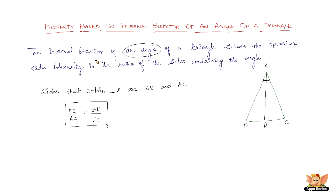Let me read the statement and explain it once more before we go to the next video. The internal bisector of an angle — the angle we are talking about is angle A, and the internal bisector is AD. That is going to divide the opposite side, BC. It is going to divide side BC internally in the ratio of the sides containing the angle. The sides containing the angle are AB and AC.